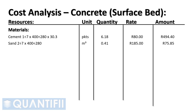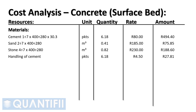Sand: 2 parts divided by 7 parts, multiplied by 400 divided by 280, multiplied by 185 Rand. Stone: 4 parts divided by 7 parts, multiplied by 400 divided by 280, multiplied by 230 Rand. Handling of cement at 6.18 pockets of cement, multiplied by 10% of the laborer's hourly rate.